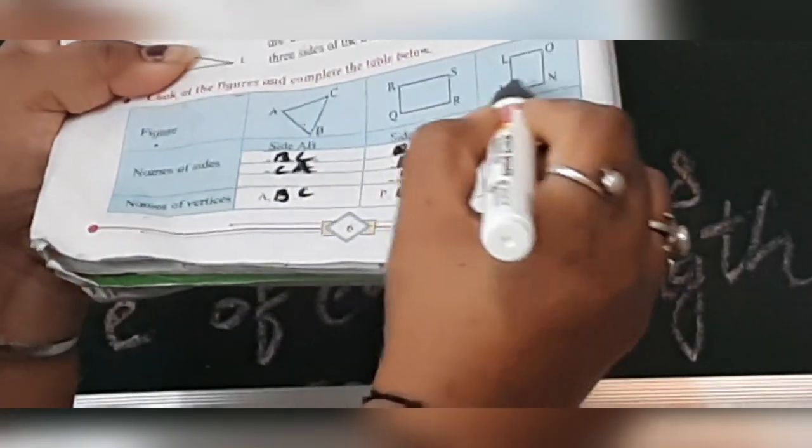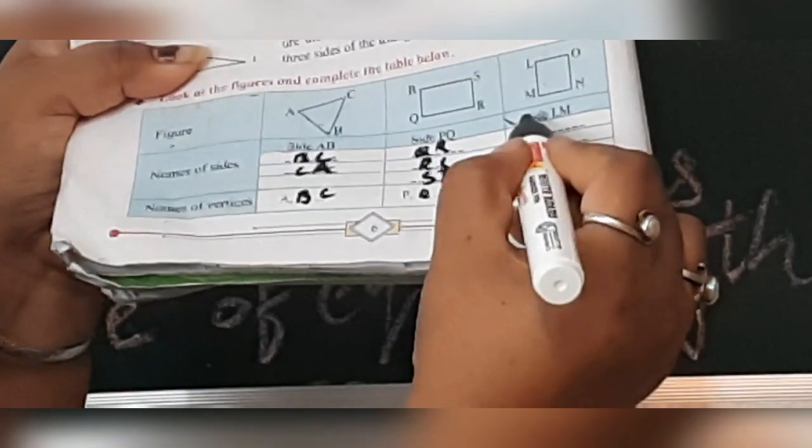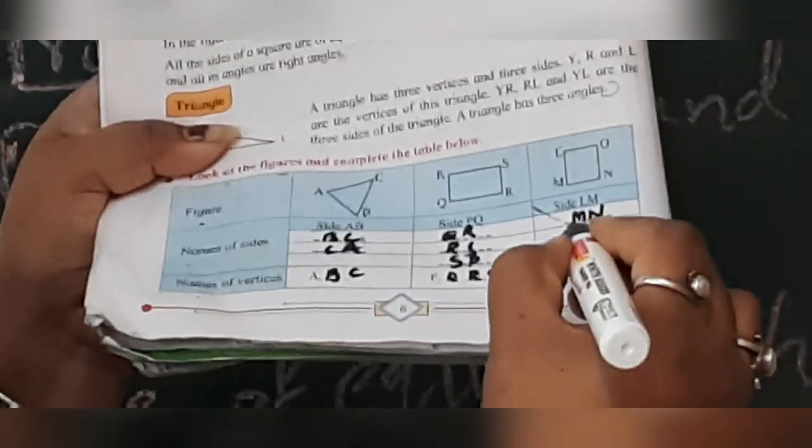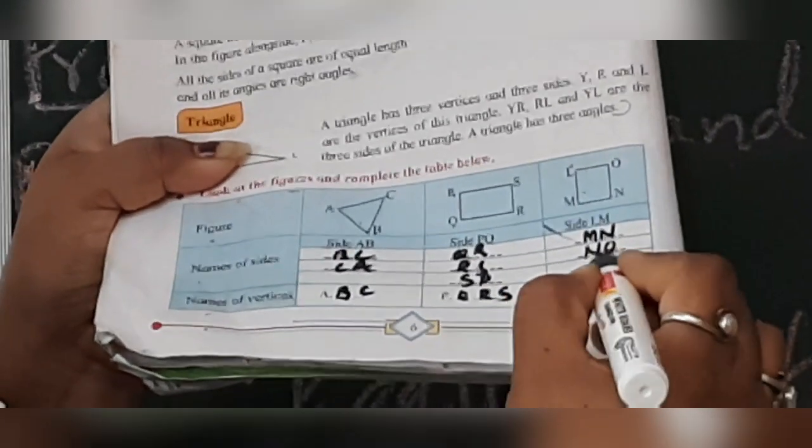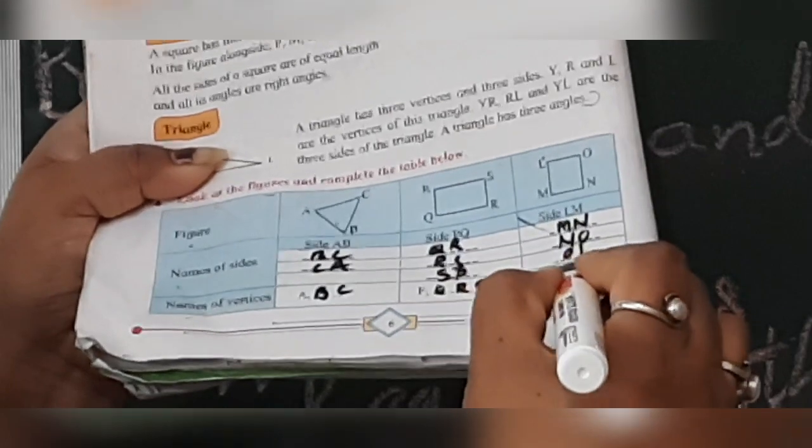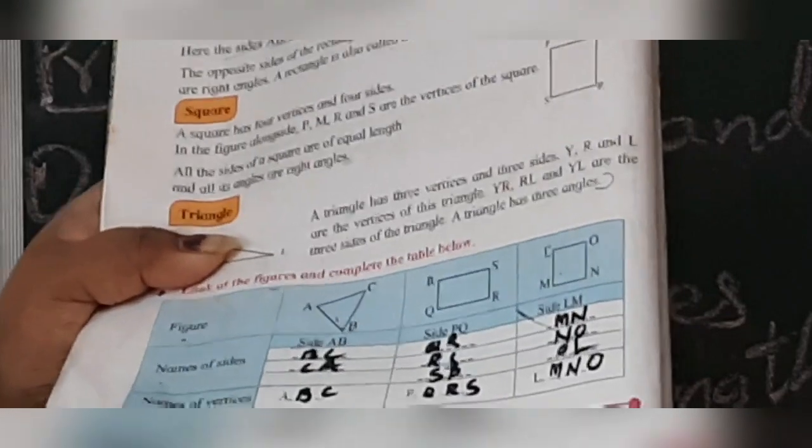Now, the same way. What is this? It is a square. So sides. L, M. Name of another sides. L, M, M, N, N, O and O, L. What are the vertices? L, M, N and O. These are the vertices. Understood my dear students?